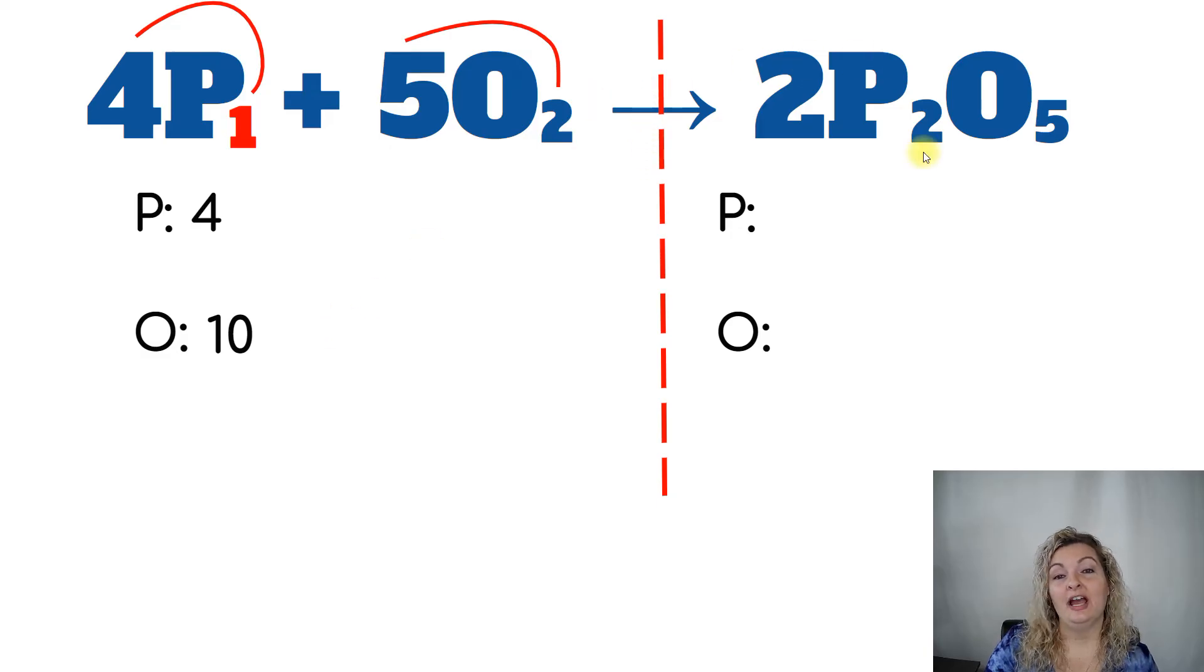Now we're going to look at our product side. And we're going to look at the 2 being our coefficient. Remember that coefficient needs to be distributed to all elements in this entire product side. So 2 times the 2 gives us 4 for phosphorus. And then 2 times the 5 gives us 10 for oxygen. Now if you look at the reactant and the product side, you will see that they are equal. In other words, this is a balanced reaction already.